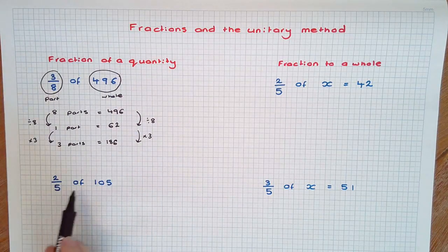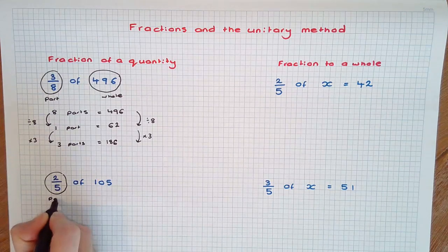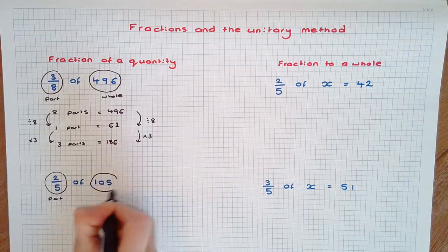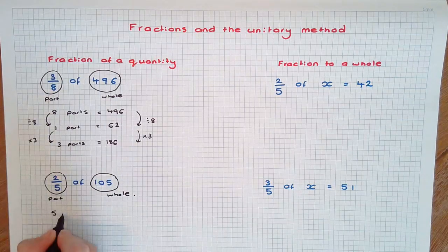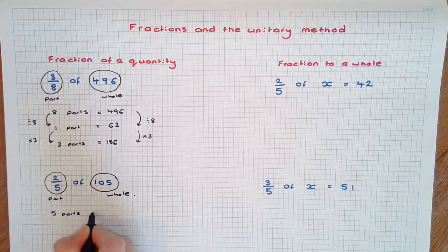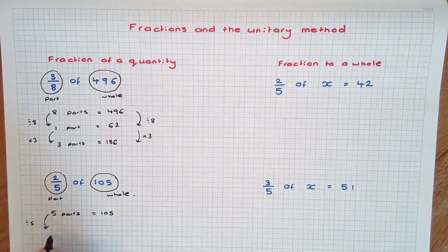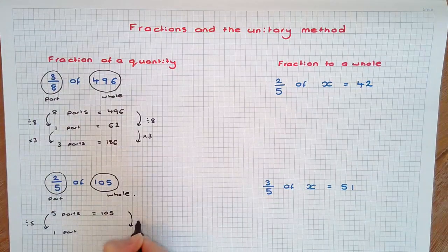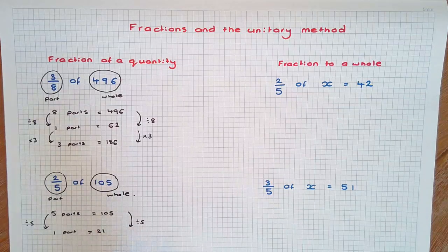Let's do that again. Here we have 2 fifths of 105. Again, the 2 fifths represents the part and the 105 represents the whole. So 5 parts equals 105. One part will be 105 divided by 5, which is 21.